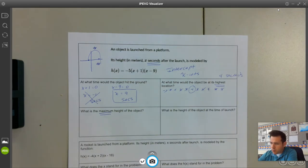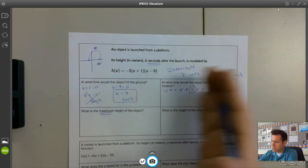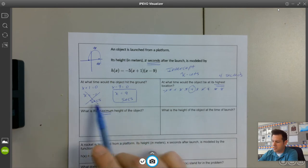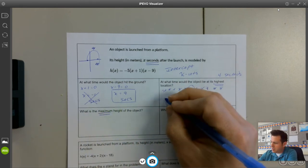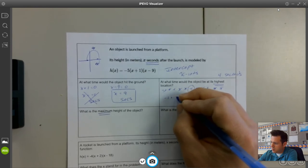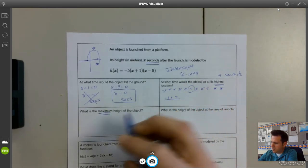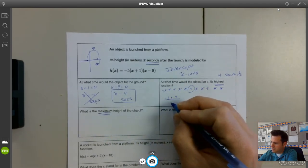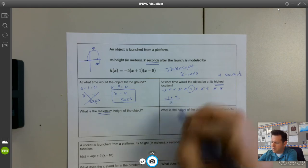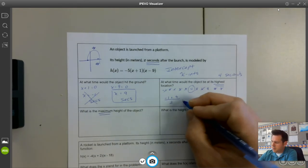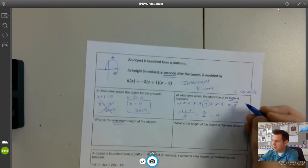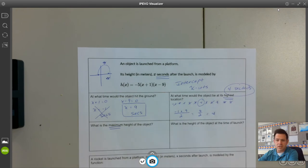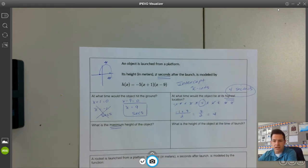We do have an axis of symmetry formula. So if you don't like just thinking about what would be in the middle of these two X intercepts, we could always just use a formula. We would take our two X intercepts from the previous problem, negative one and nine, and divide it in half. So negative one plus nine is eight. Eight divided by two is four. That's another way to get that our highest location here would be at four seconds.